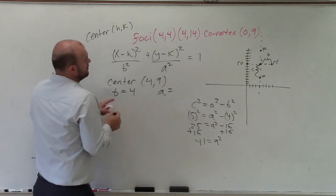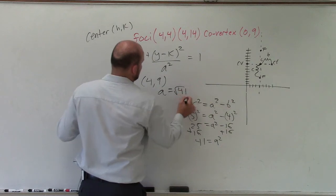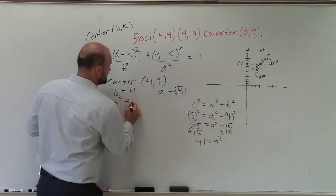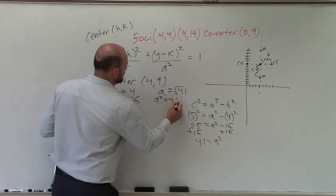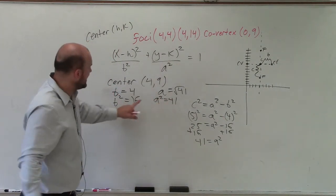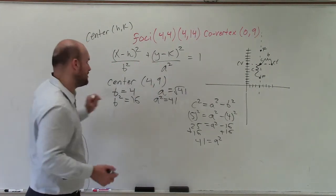So therefore, ladies and gentlemen, a would be the square root of 41. So we know b squared is equal to 16, and a squared is equal to 41. So now we know what a squared is, b squared is, and our h and our k, which is our center, we can now write the equation.